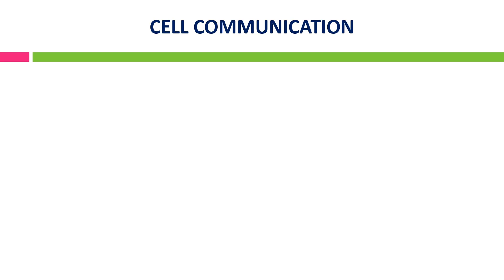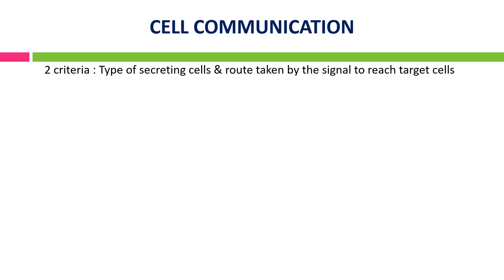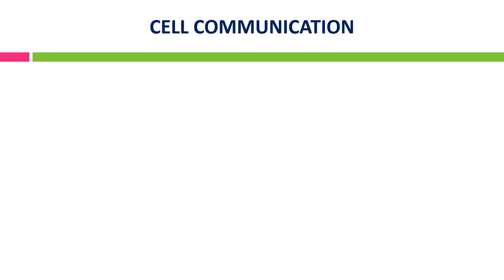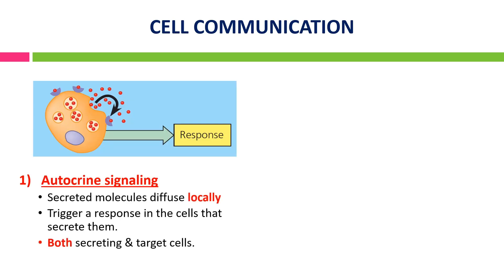There are diverse ways that cells use chemical signals to communicate, classified by two criteria: the type of secreting cells and the route taken by the signal to reach the target cell. The first type is autocrine signaling, where the signaling cell sends a signal to itself. 'Auto' is a prefix for self, and 'crin' is a suffix for secrete. The secreted molecule diffuses locally and binds to the receptor on its own surface, executing an appropriate response. This type of signaling often occurs during early development of an organism to ensure that cells develop into the correct tissue and take on proper function.